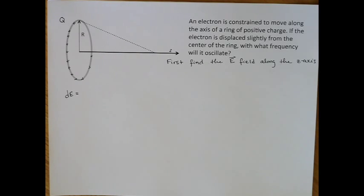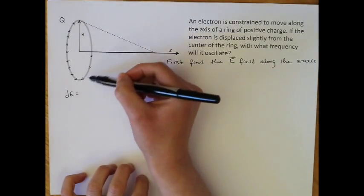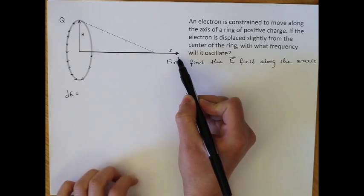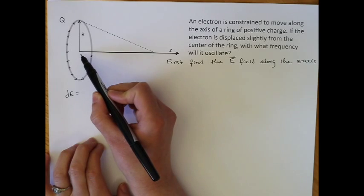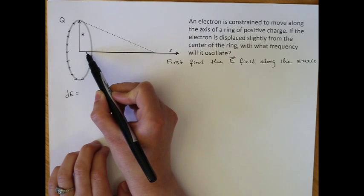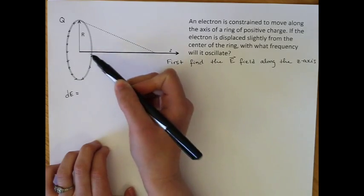An electron is constrained to move along the axis of a ring of positive charge. So here's our ring of positive charge, here's its axis, the z-axis, which is coming out of the center of the ring. If we put an electron right in the center of this ring and displace it very slightly from center, we want to know what frequency that electron will oscillate with back and forth through the center of the ring.